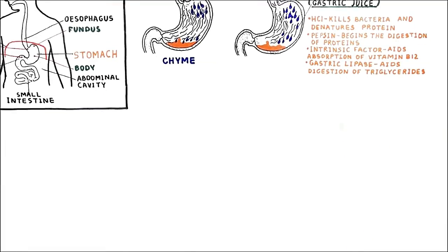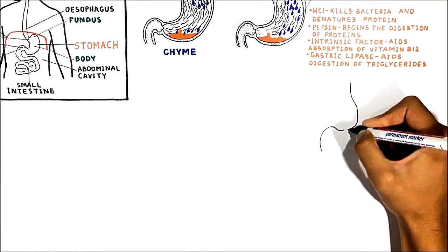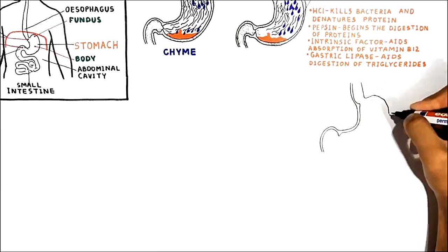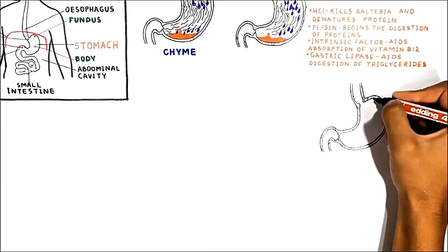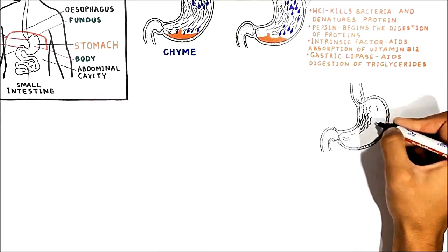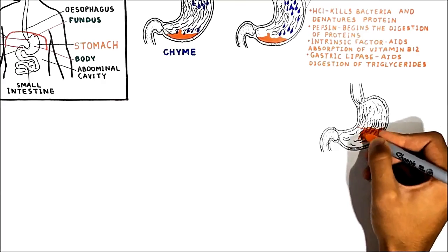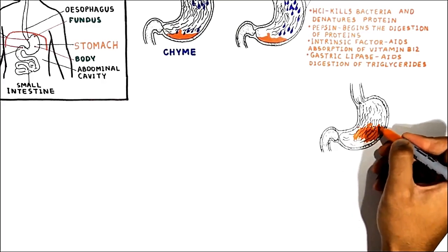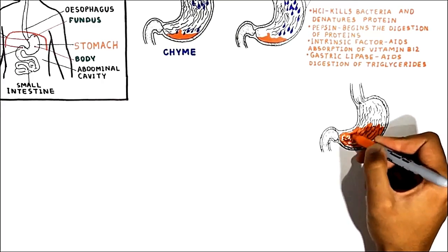Thirdly, the stomach serves as a reservoir for food before release into the small intestine. This is because we eat much quicker than the time it takes for food to be digested and absorbed.